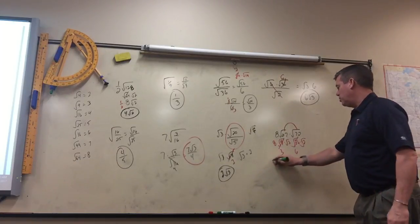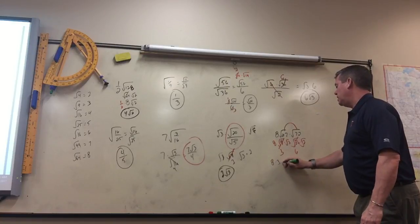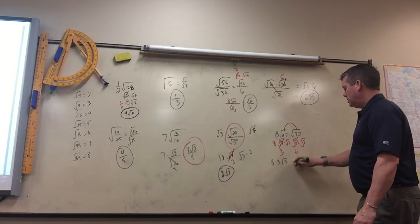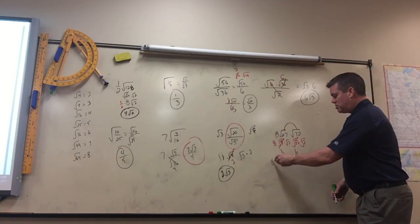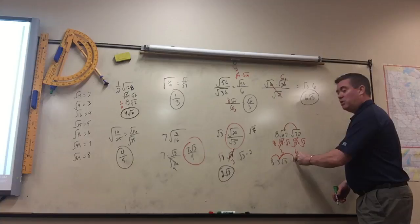So if we wrote it all out, it would be 8 times 3 times the square root of 3 times 6 times the square root of 2. It's all multiplied, so what you'd want to do is multiply the outside numbers.